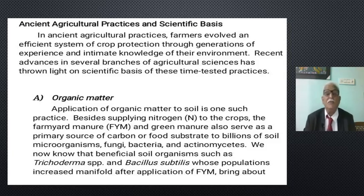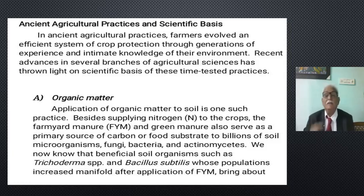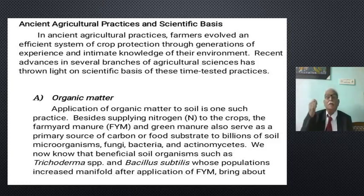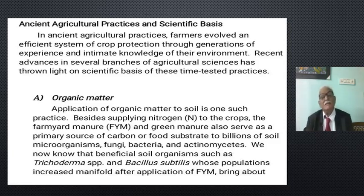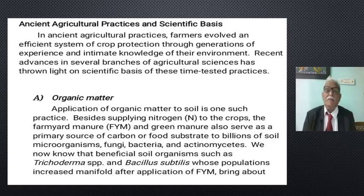In ancient agriculture, farmers evolved an efficient system of crop production and protection through generations of experience and intimate knowledge of their environment — that means the soil-plant-atmosphere continuum. Recent advances in several branches of agricultural sciences have thrown light on the scientific basis of these time-tested practices.